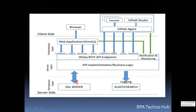With the help of API implementation or business logic, the data will be stored in SQL Server, and you can retrieve the same with the help of API and API implementations in the Orchestrator UI. Similarly, once the process is completed, it will be published and via the UiPath Agent it will hit the API endpoints, go get stored in SQL Server. The logs will be stored in Elasticsearch, which is a non-RDBMS, and SQL Server is an RDBMS — relational database management system.